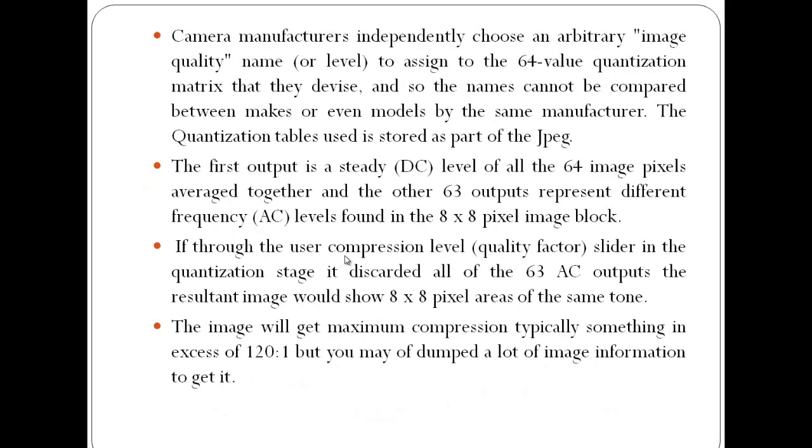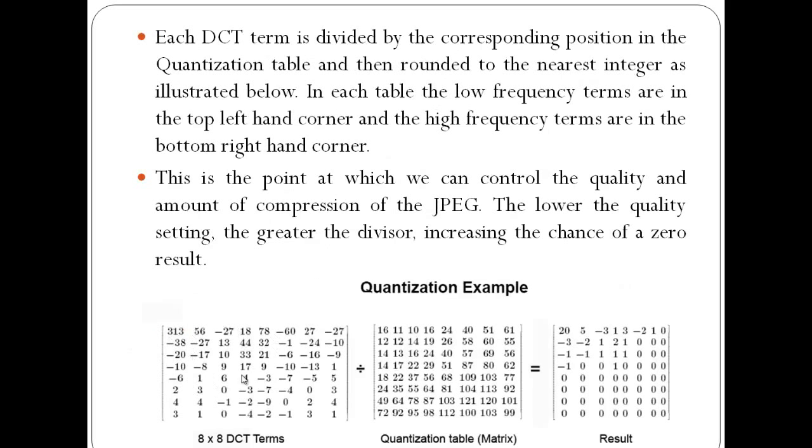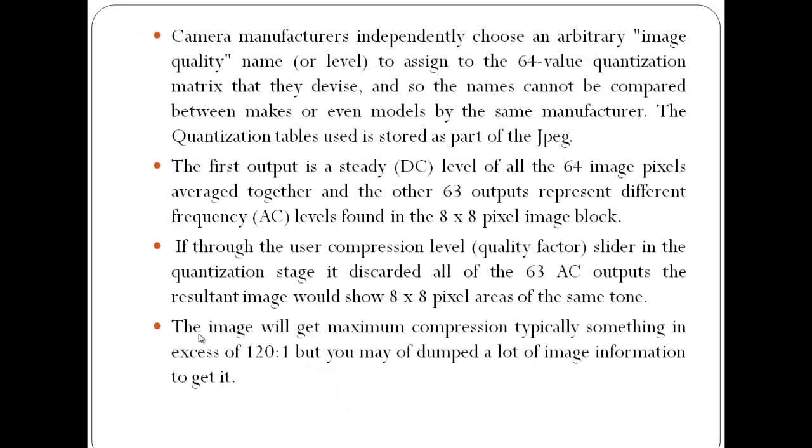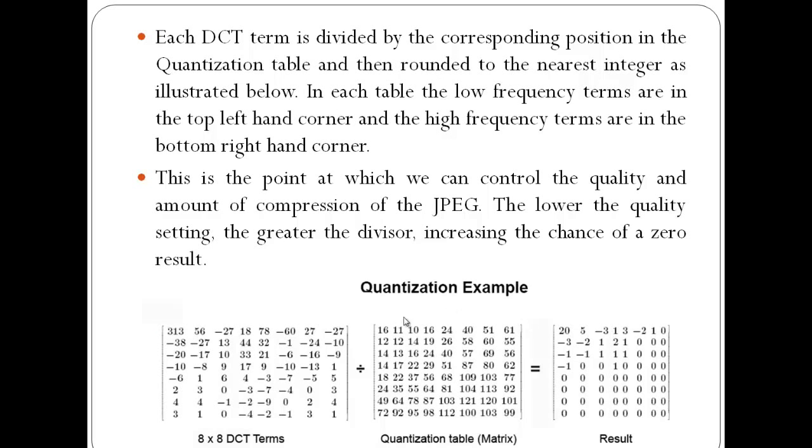If through the user compression level or quality factor slider in the quantization stage, we discard all of the 63 AC outputs, the resultant image would show 8x8 pixel areas of the same tone. The image will get maximum compression, typically something in the range of 120:1, but you may get a dumped or low-detail image.